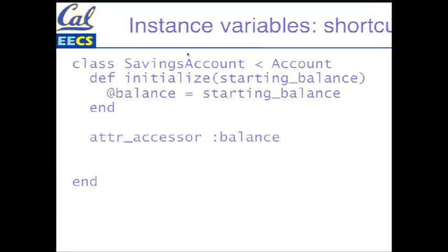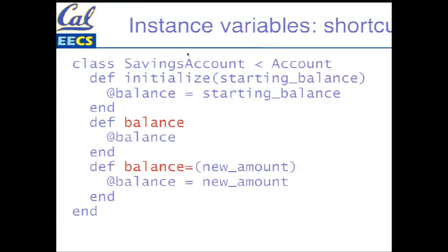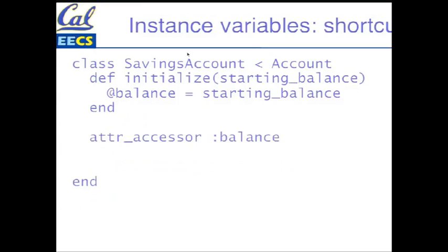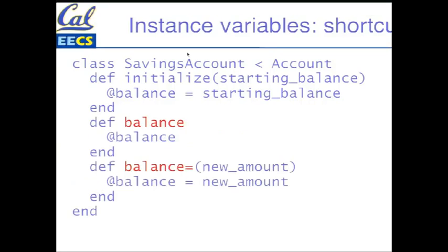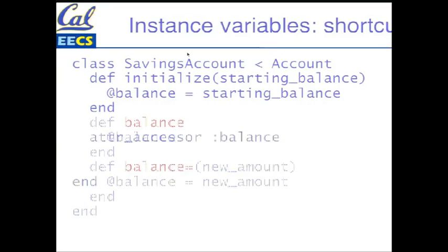attr_accessor, again, is, like so many other things we've seen, not part of the language. It is just a plain old regular method that uses meta programming, programming at runtime, defining new code at runtime, to create those methods for you on the fly. It's basically taking the thing that you pass, the symbol balance, and it's using that as a template to define these methods on the fly and provide them for you. So it really is, in that sense, just saving you some typing and a fair amount of readability.